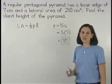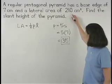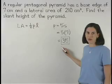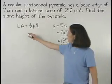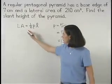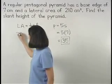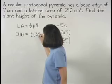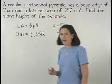Now, since the lateral area is 210 and the perimeter of the base is 35, we can plug this information into the formula to get 210 equals 1 half times 35 times l.